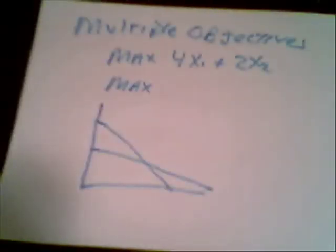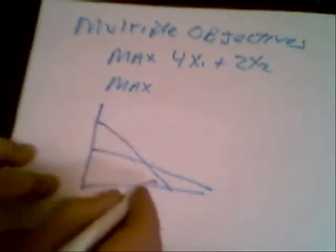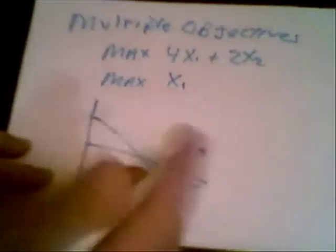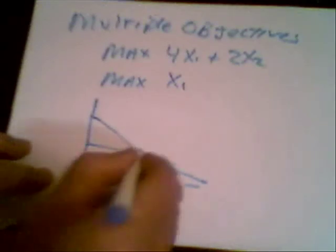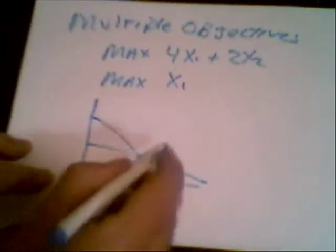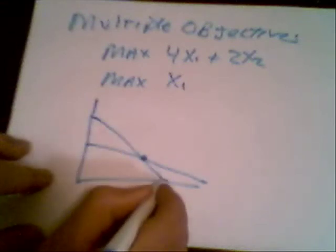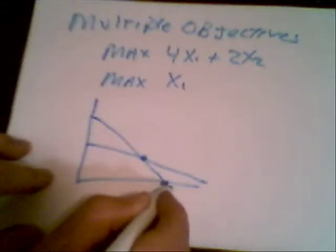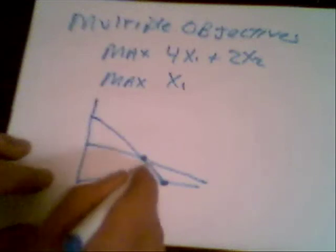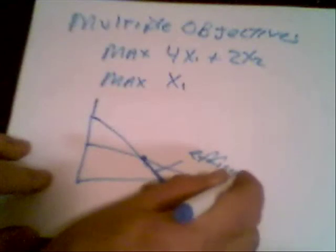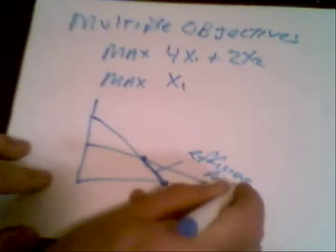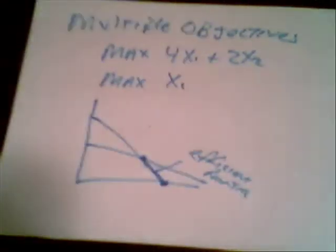The final case is multiple objectives. What happens if you have multiple objectives? What happens if your employees really like to produce tables but not chairs? Well then, this was the original solution. This would be the second one. Where's the best point? Well, it turns out the best point would be somewhere in here on the efficient frontier. And then you just have to decide which one is best on that efficient frontier. That's it!